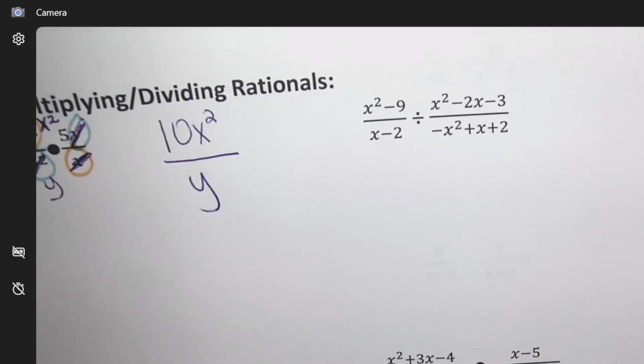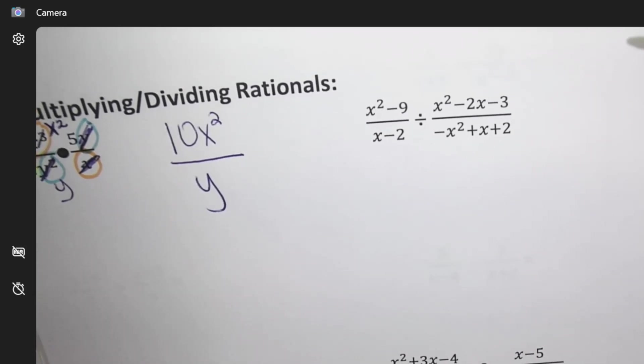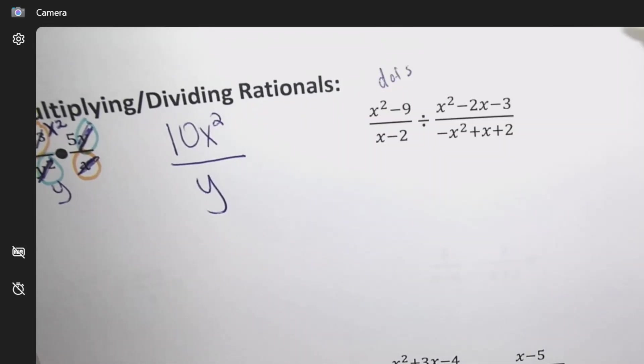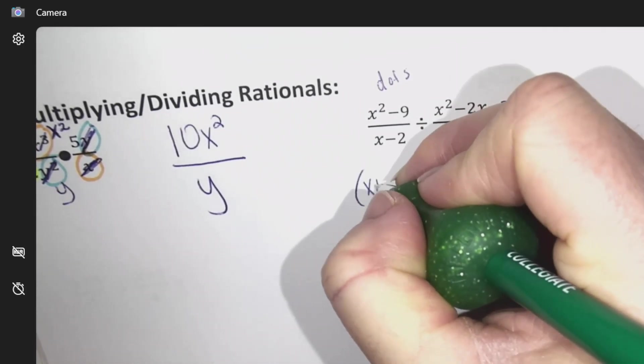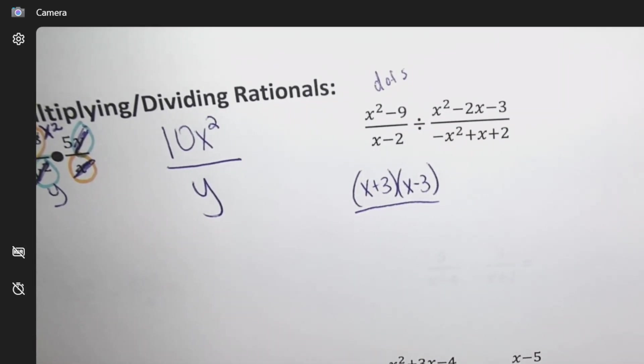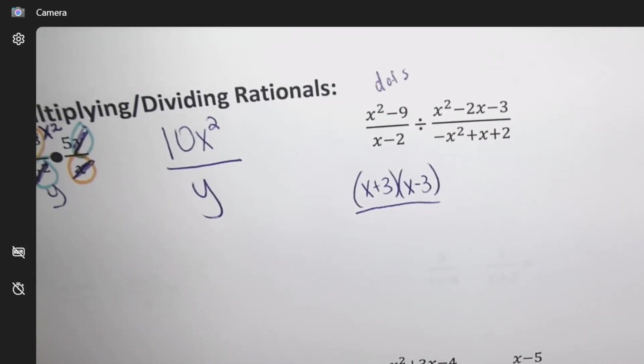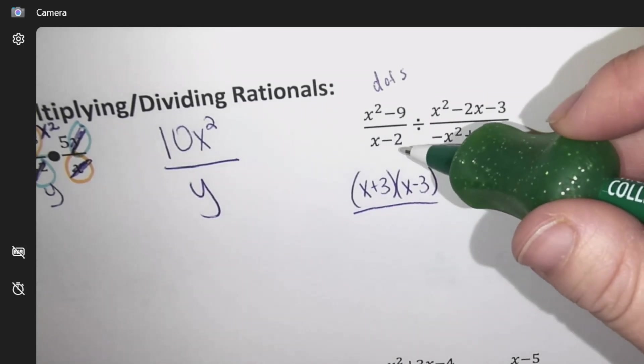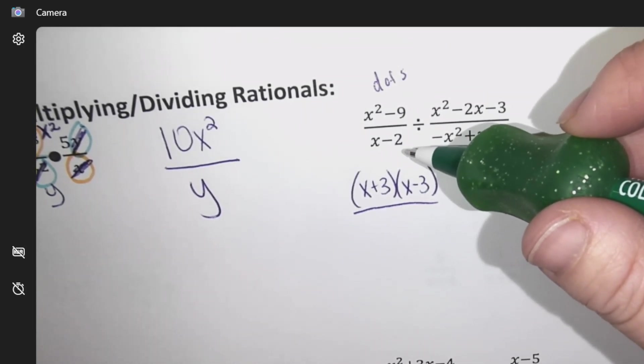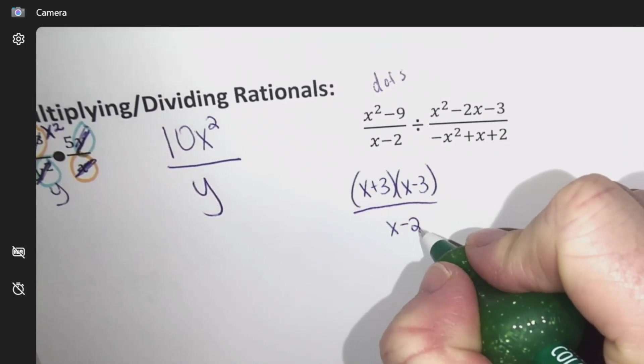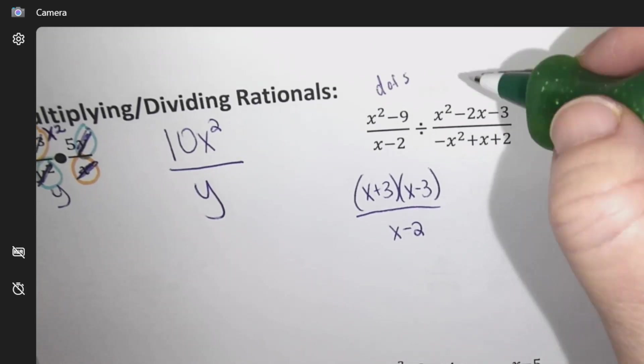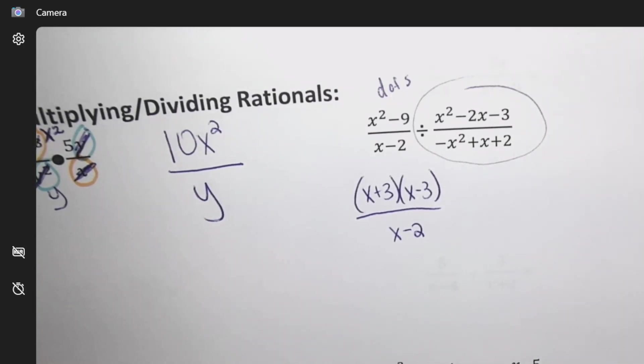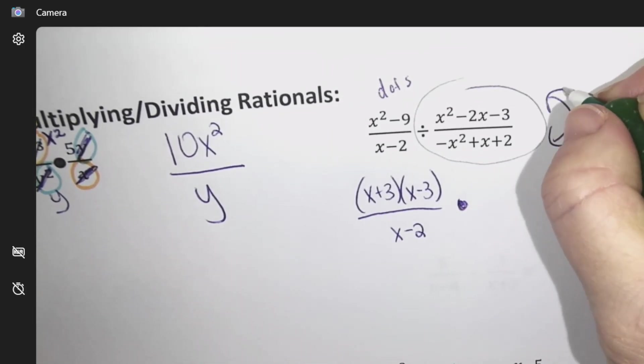Okay, now rationals. Yesterday we learned we have to have our factoring styles mastered. We should instantly be able to recognize, oh that's a difference of squares. X subtract 2 - is there anything I can do with that? No. What do we do when we divide a fraction? Divide - instead of divide, I times and flip.